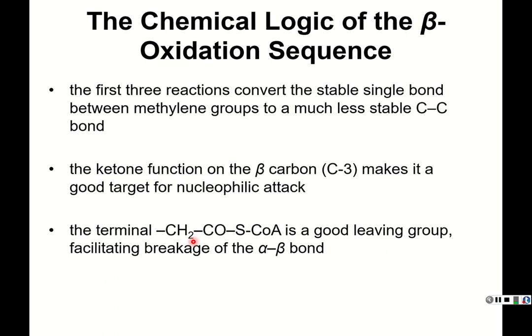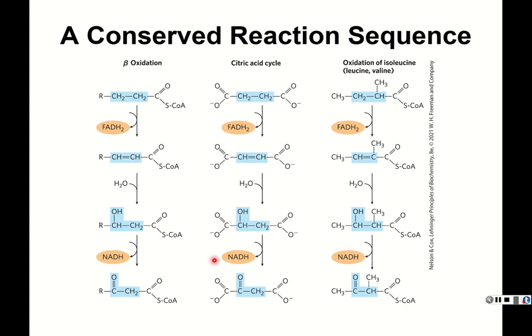This reaction sequence is similar to reactions seen in the citric acid cycle — reducing FAD to FADH2, hydrating, then using NAD+ to convert an alcohol to a ketone. The same chemistry is also used in oxidation of the branched-chain amino acids isoleucine, leucine, and valine, as we'll see in the next chapter.